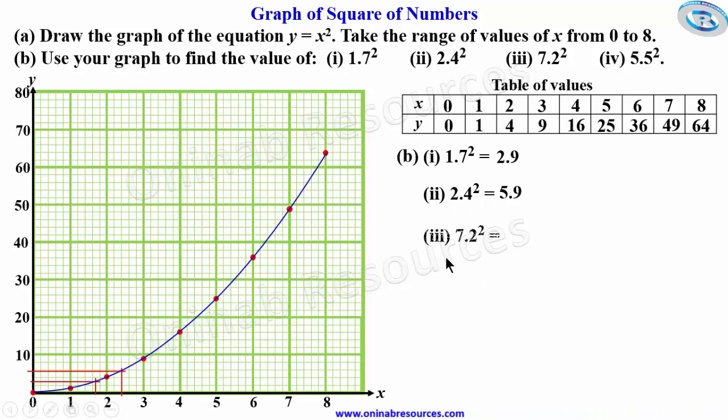For (iii) 7.2², we come to where x is 7.2. We draw the line to touch the curve, and from there we find the point of intersection and draw it to the y-axis, which is approximately 52.